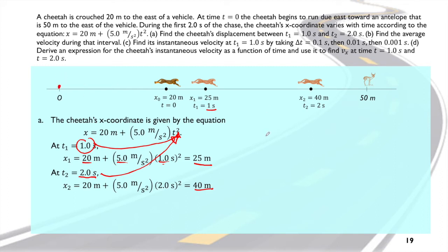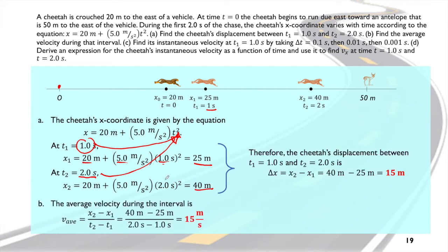The question letter (b) says: find the average velocity during the interval. Now remember the formula of average velocity. The average velocity is x₂ minus...